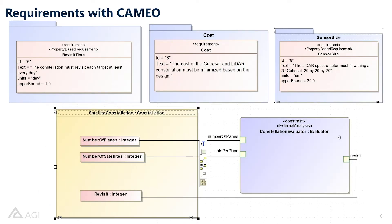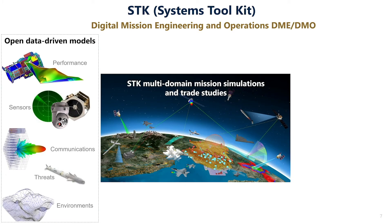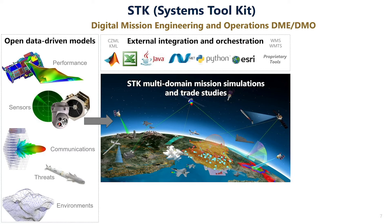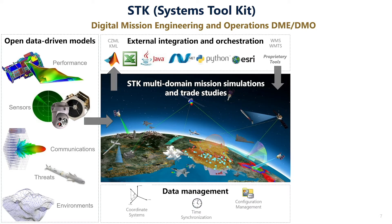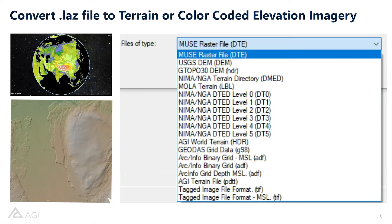Here you can see our three requirements as laid out in Cameo: the constellation must visit each of our 12 critical regions and revisit at least every day; the cost must be minimized; and we can only have one spectrometer per CubeSat. We will use open data-driven models such as spectrometers and a bathymetric LiDAR spectrometer system, feeding directly into STK's multi-domain mission simulations toolkit, alongside external integration with Model Center, Cameo, and Excel. A downside of using LiDAR is that the only output is the LAS file, which can be limiting in which software you use for analysis.